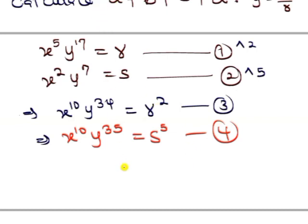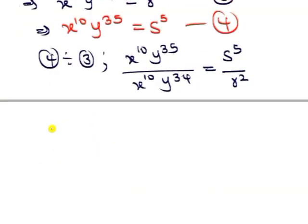So as it is now, I can divide equation 3 by equation 4, or equation 4 by equation 3. Maybe we should do it that way. Let's do equation 4 by equation 3. So from here now, it then means that this will take away this. So y^34 will cancel with y^35 and it will remain only one.